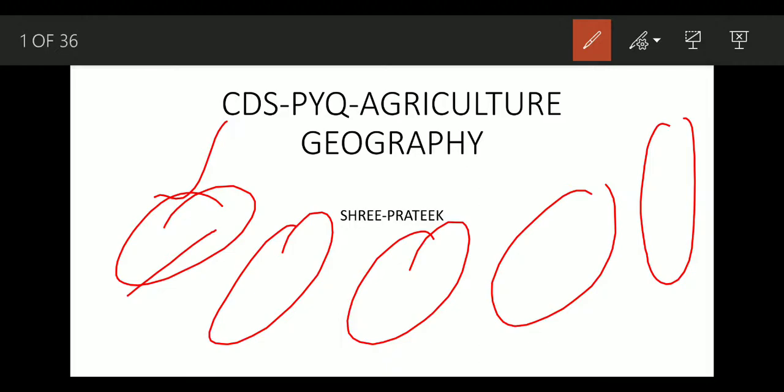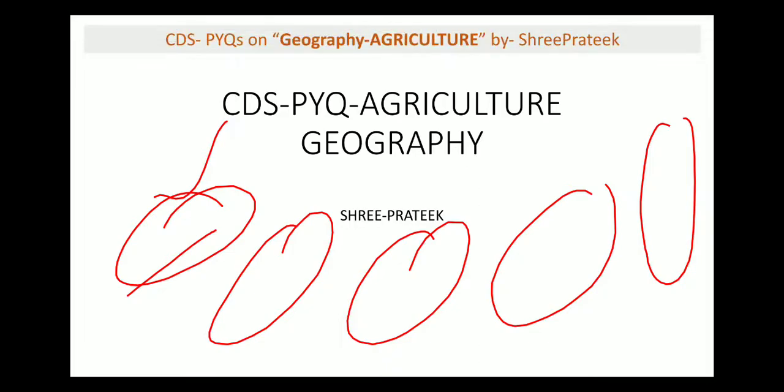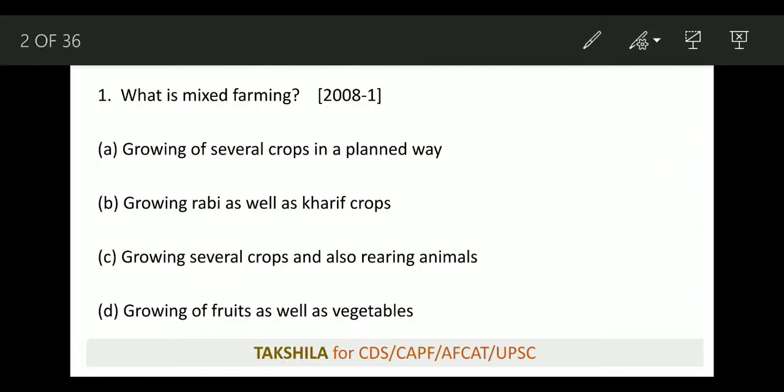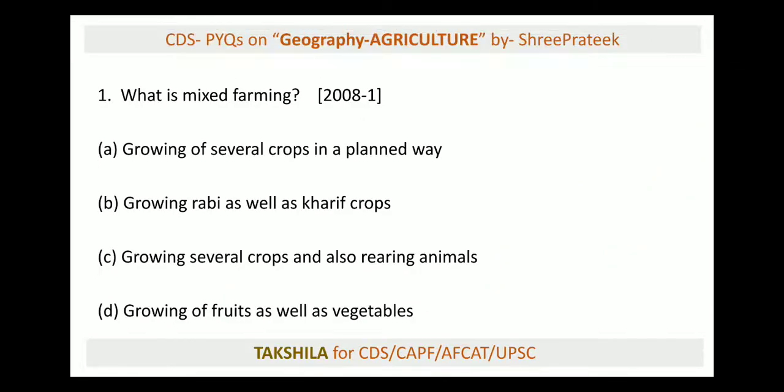Agriculture is not only a geography topic, it is also an economics topic, as agriculture is basically the primary activity and relates to GDP. Let's look at the first question from CDS 2008.